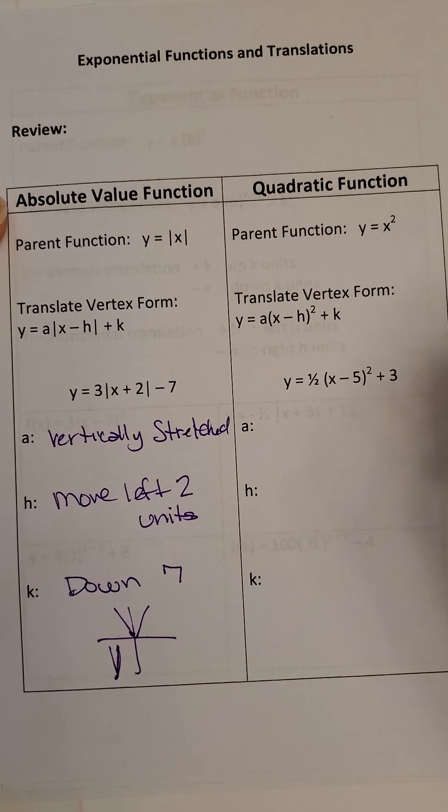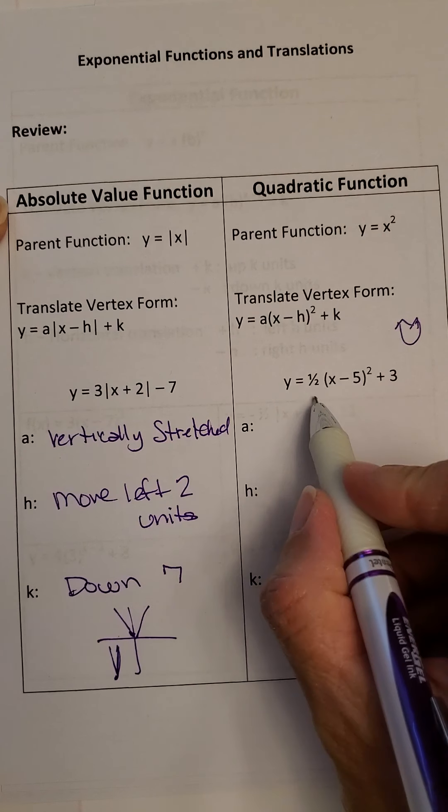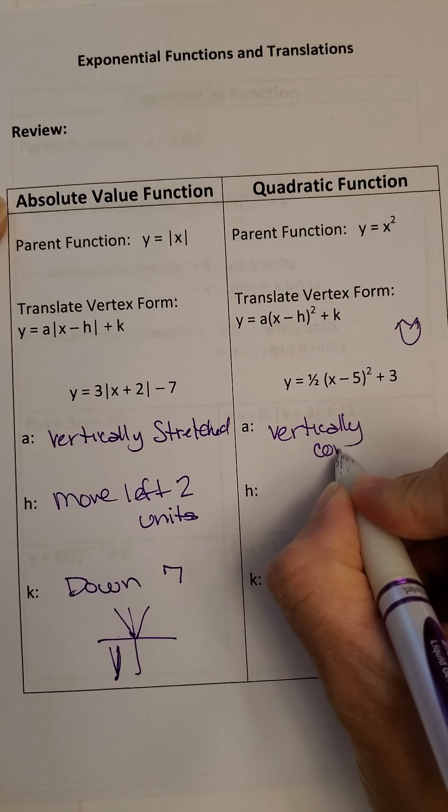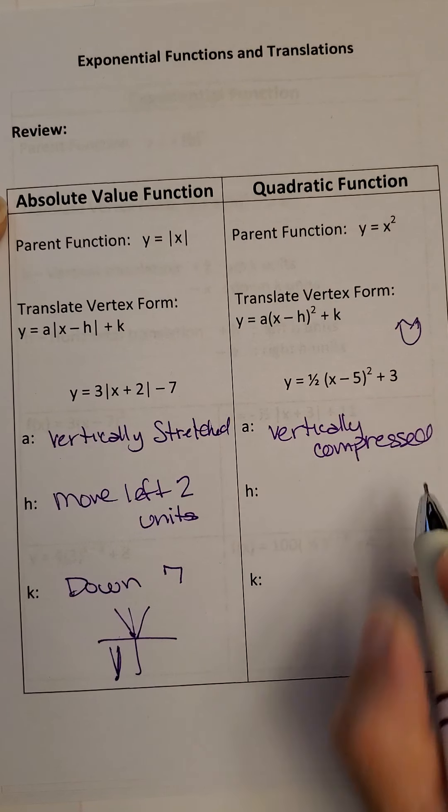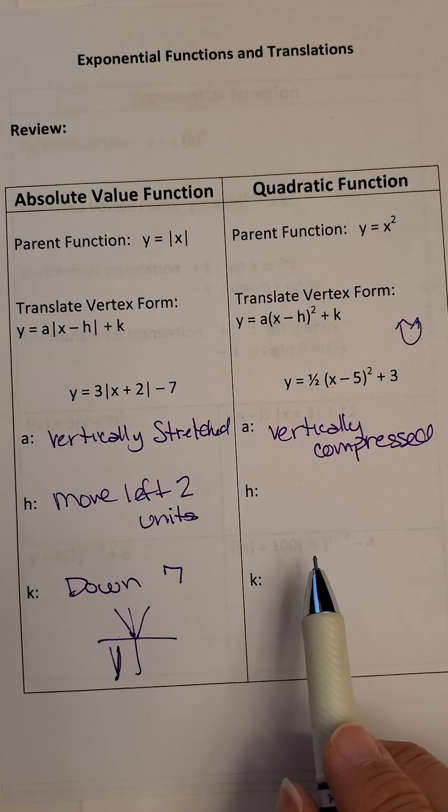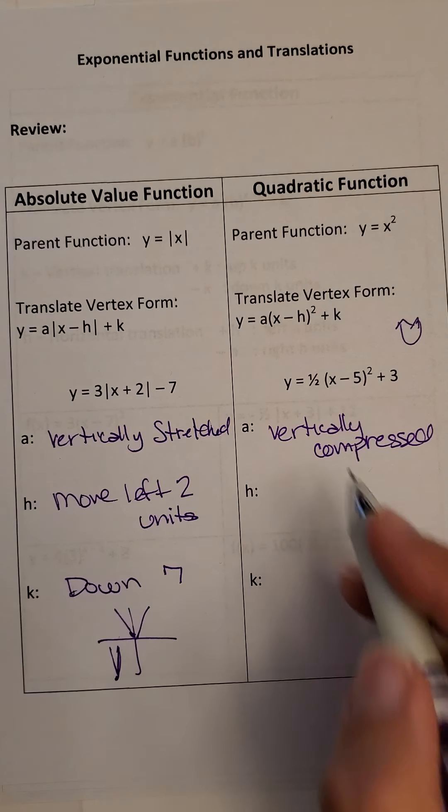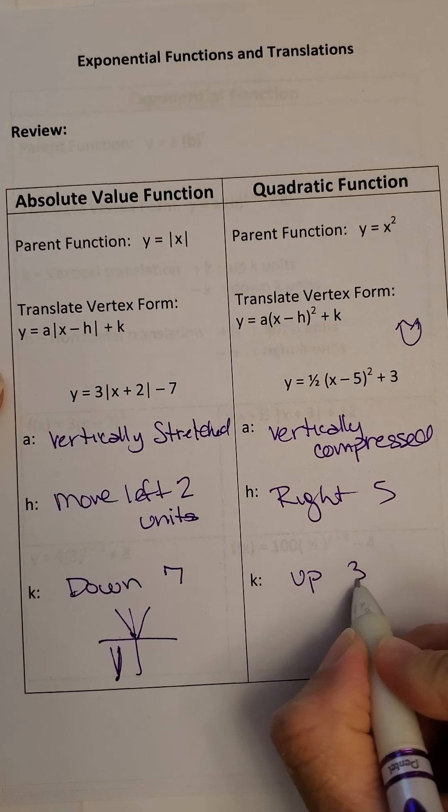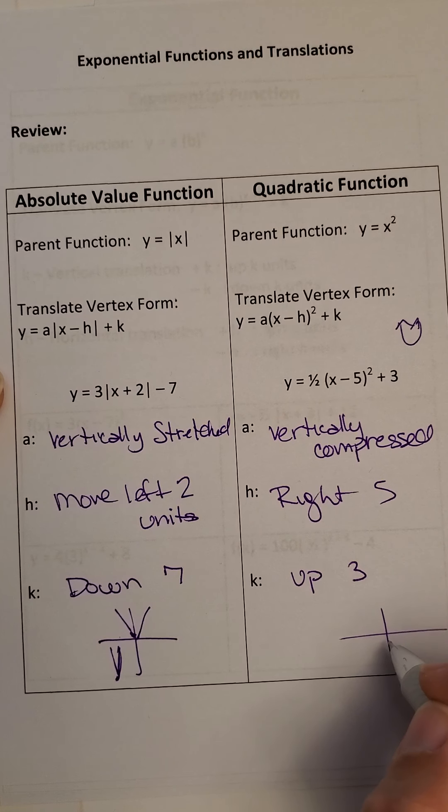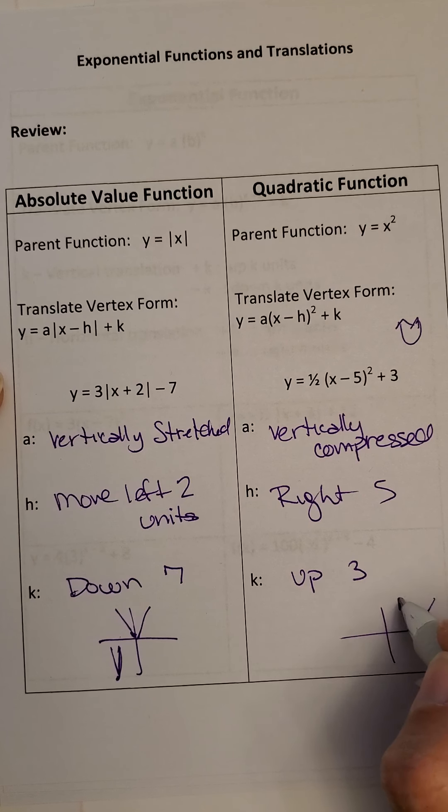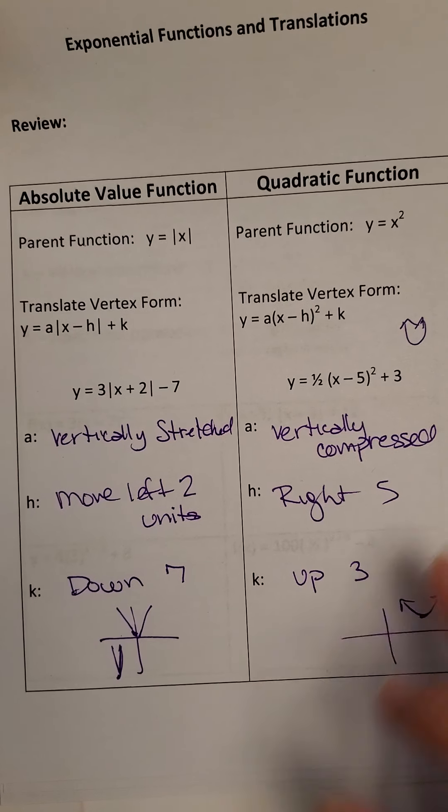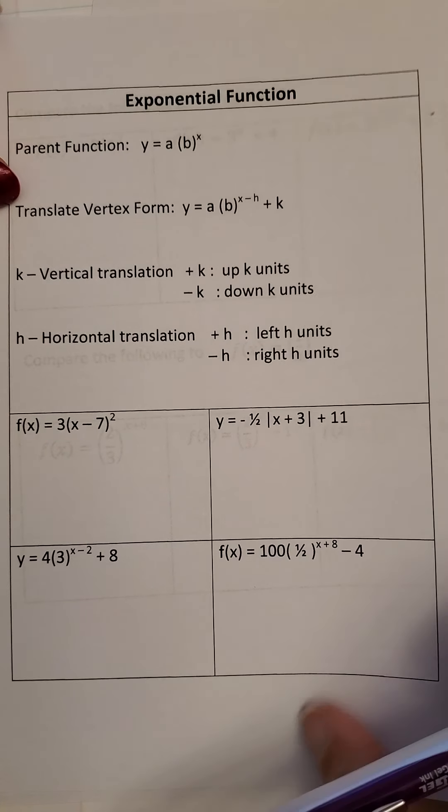Moving over to a quadratic function which is a U shape. So the 1/2 tells us that it's vertically compressed. If the absolute value is between 0 and 1, then it's vertically compressed. The minus 5 tells us it moved right 5, and the plus 3 tells us it moved up 3. So if we had a U-shape, we know we would go right 5, up 3, and it would be a little bit wider than normal. Now we're going to take this and we're going to apply it to exponential functions.